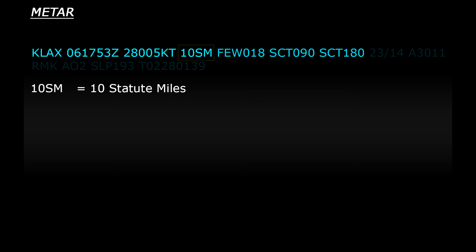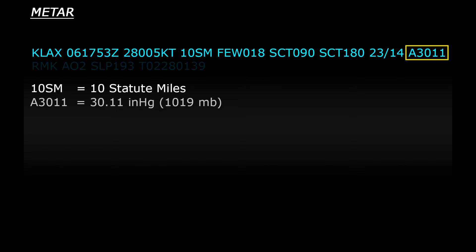Next we have three layers of cloud coverage, then the temperature and the dew point, and then lastly we have our barometric pressure, which is our next difference. In North America they measure air pressure in inches of mercury, compared to millibars in other parts of the world. So their METARs give air pressure info as inches of mercury — in this example it would be 30.11 inches.